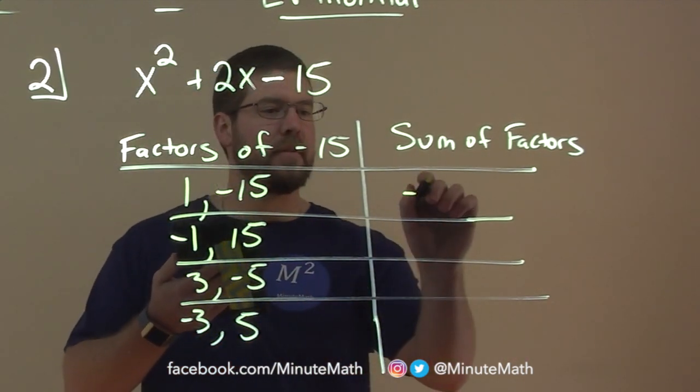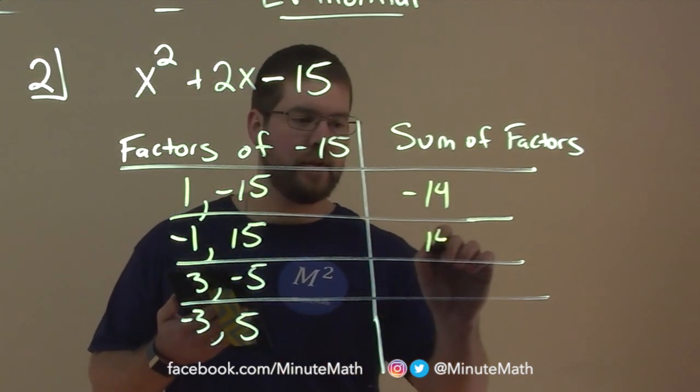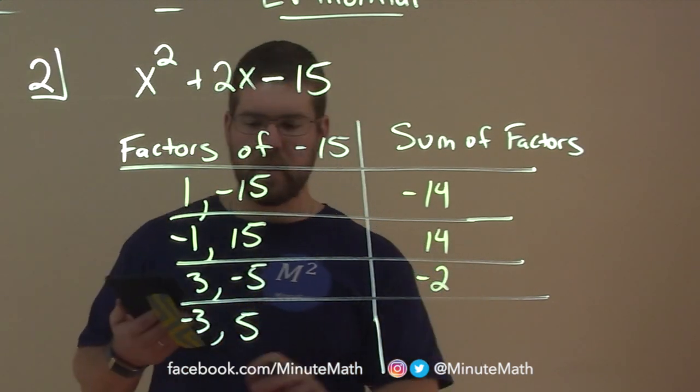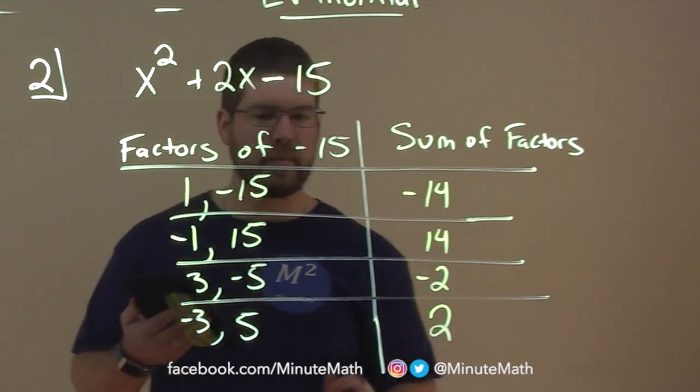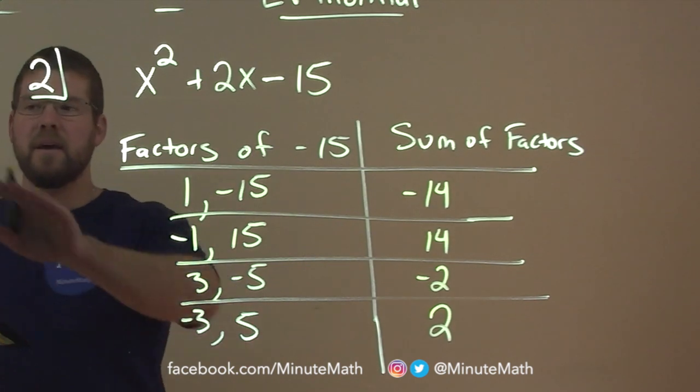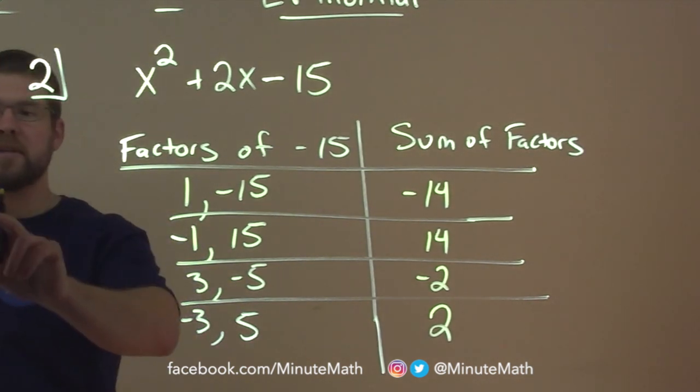1 plus negative 15 is negative 14. Negative 1 plus 15 is positive 14. 3 plus negative 5 is negative 2. And negative 3 plus 5 equals 2. What we're doing with this table is setting up a way to see which one of these pairs matches up.